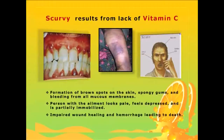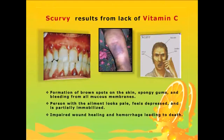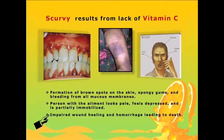The disease scurvy, caused by lack of vitamin C, is characterized by formation of brown spots on the limbs — especially hands and legs — spongy gums, and bleeding from all the mucous membranes. Persons with this ailment often display a very pale appearance, a depressed state of mind, and an almost immobilized condition. Impaired wound healing and bleeding may cause death.